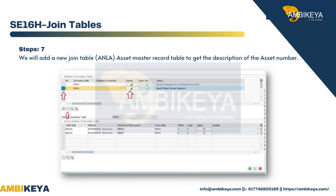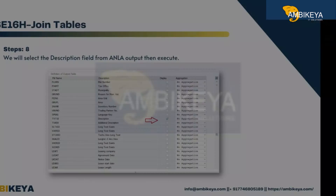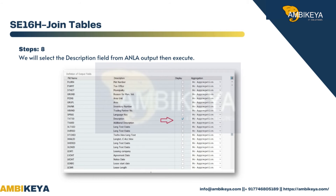Step 7: We will add a new join table ANLA — the asset master record table — to get the description of the asset number. Step 8: We will select the description field from the ANLA output, then execute.